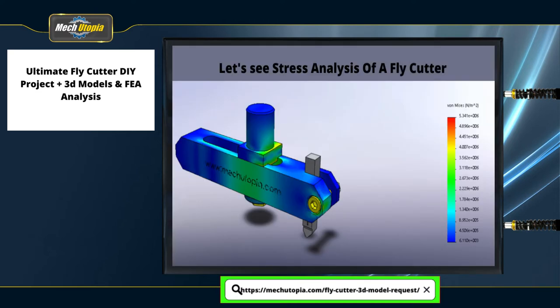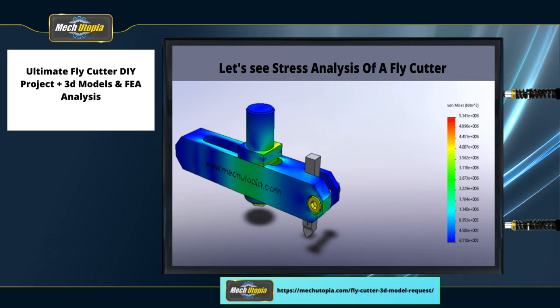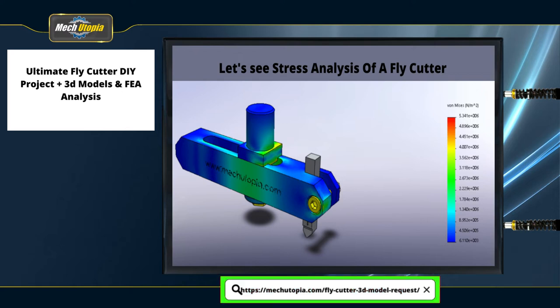Let's look at the stress analysis of the fly cutter. We are sharing our structural analysis so you can see how the fly cutter body responds to high RPM. Our goal was to confirm the design concept was safe. As you can see in the figures, stress increases proportionally with spindle speed. When we spin faster, the fly cutter produces more centrifugal forces, which transfer directly to the tool holder, spindle bearings, spindle housing, and the chassis of the milling machine.